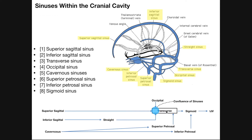So, the inferior sagittal sinus drains into the straight sinus, which drains into the transverse sinus. Anything draining into the transverse sinus goes into the corresponding sigmoid sinuses and then the corresponding internal jugular veins. There's also the occipital sinus, which drains the occipital part of the brain and also drains into the transverse sinus. Three structures — the occipital sinus, the straight sinus, and the superior sagittal sinus — all drain into the same point on the transverse sinus, which is called the confluence of sinuses.